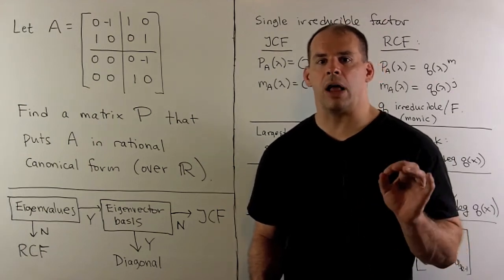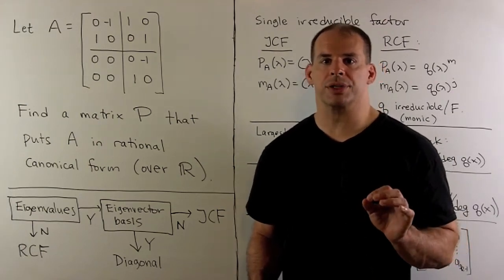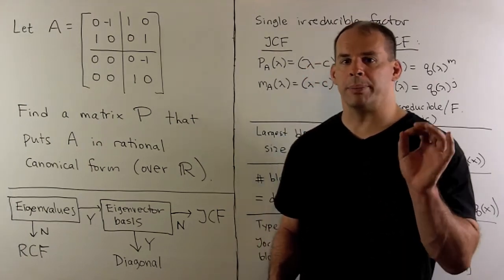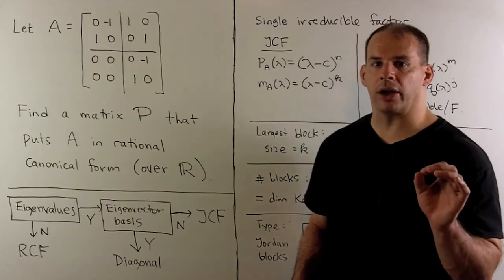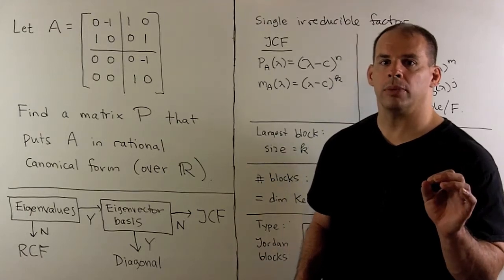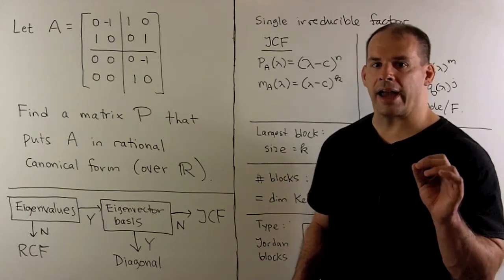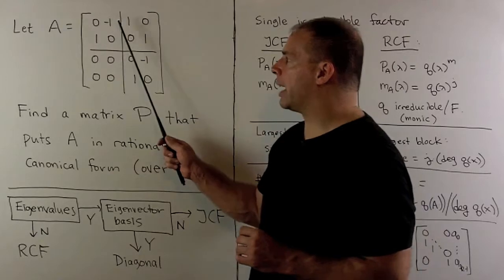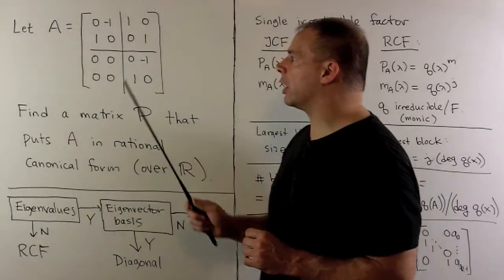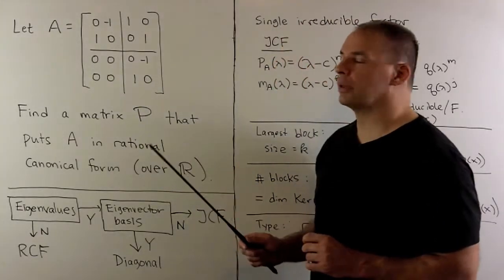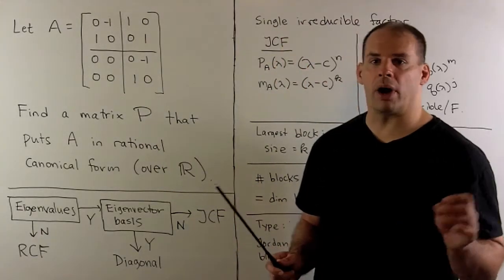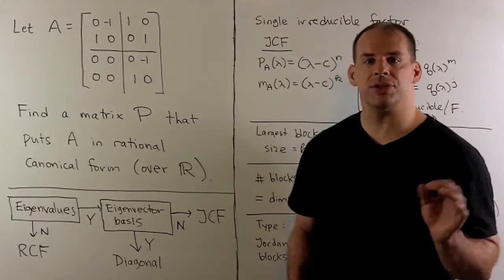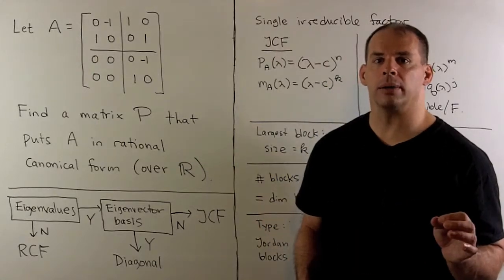Let A be the following real matrix. A is going to be block upper triangular. On the diagonal we'll have two-by-two blocks: zero, minus one, one, zero. In the upper right-hand corner, I have one, zero, zero, one, and zeros elsewhere.